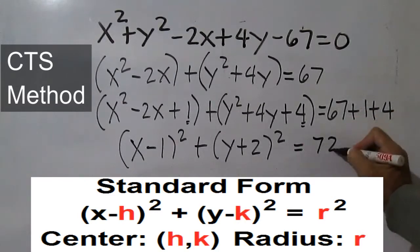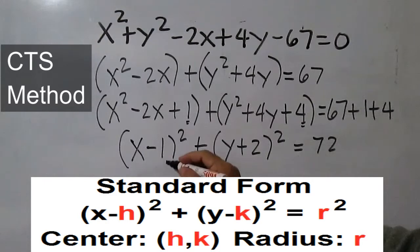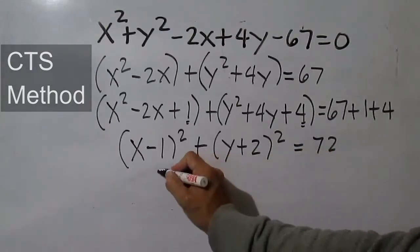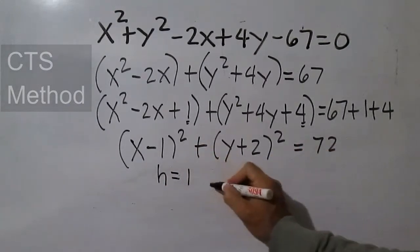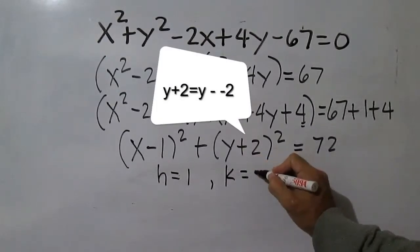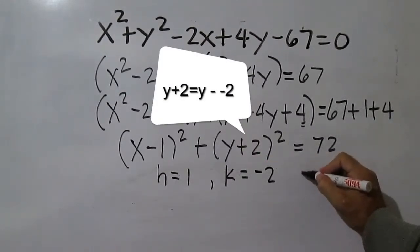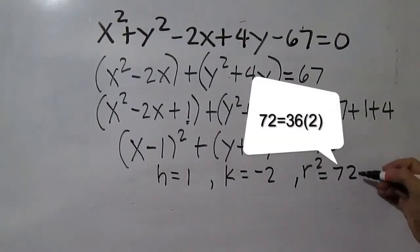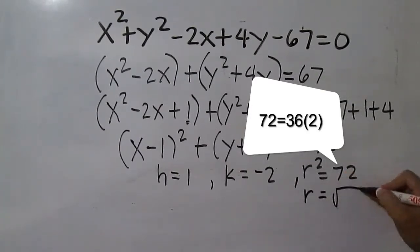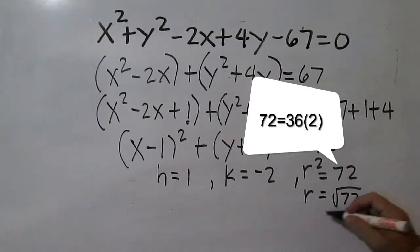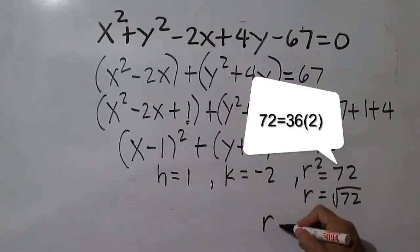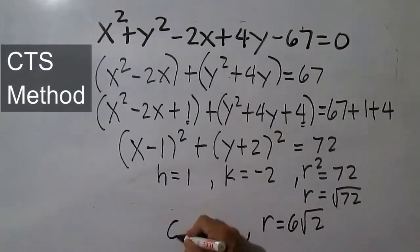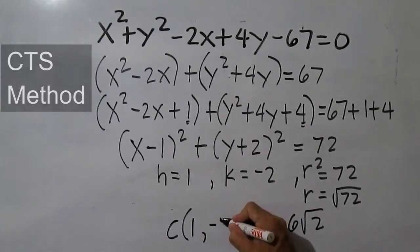We already have an equation in standard form where h is 1, k is negative 2 (from y minus negative 2), and r squared is 72. Since we only need r, this is equal to the square root of 72, and 72 is 36 times 2. So r is 6 times the square root of 2, and the center is at (1, negative 2).